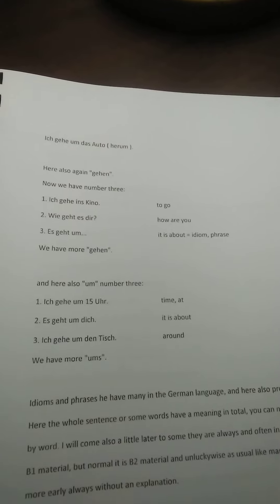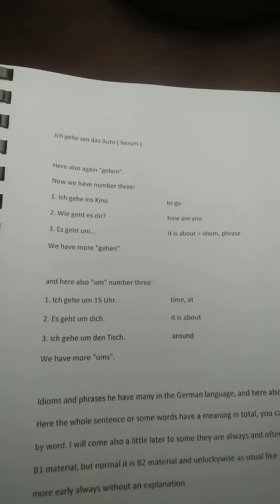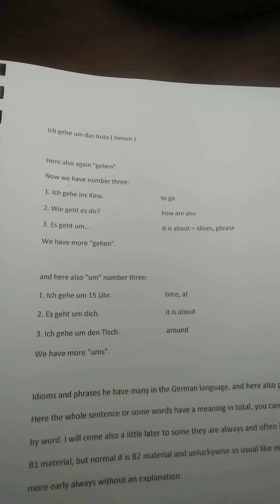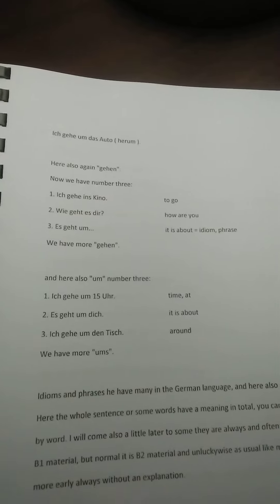Now I come to explaining 'ich gehe', and we have three meanings of 'gehen'. Number 1: ich gehe, for example, ins Kino — this means 'ich gehe' to where (wohin), so this 'gehen' means 'to go'. Number 2: wie geht es dir — how are you. I'll come to this a little bit later, because this 'gehen' you cannot translate word by word; it's a kind of expression.